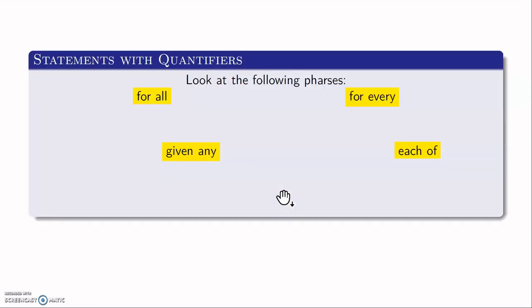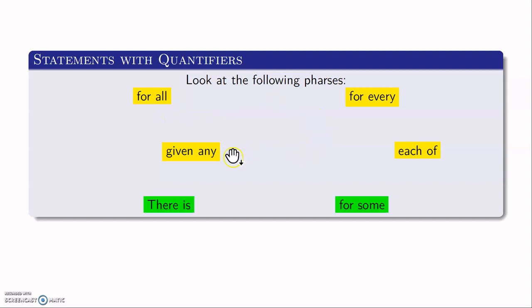Let's begin with statements with quantifiers. You look at the following phrases — you must have heard these: 'for all', 'for every', 'given any', 'each of'. All these four convey the same meaning. And these two in green — 'there is' and 'for some' — these two convey the same meaning. These two are saying that something is happening for at least one, whereas the top four are saying something is happening for all of something.